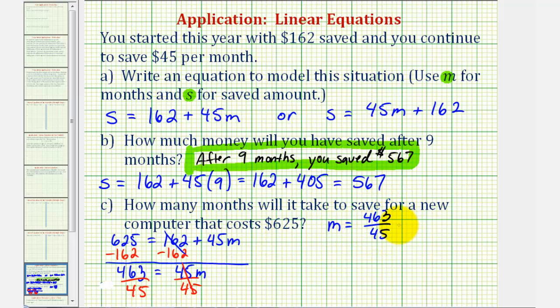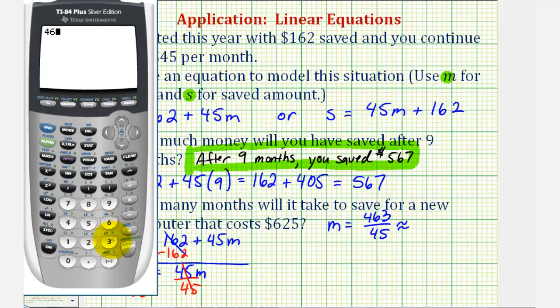Let's go ahead and find this quotient on the calculator. 463 divided by 45. Notice how this quotient is approximately 10.29.